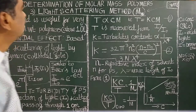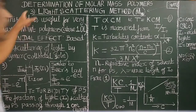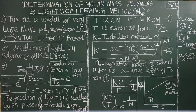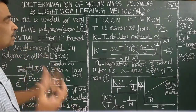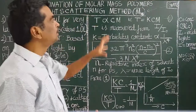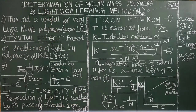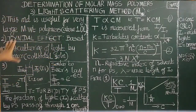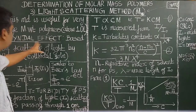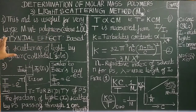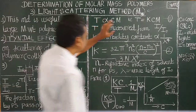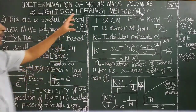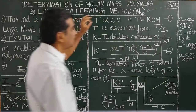Good morning. Today we cover the light scattering method for the determination of molar mass of polymers. This method is based on the Tyndall effect. Using this method, the mass average — or weight average — molar mass of the polymer is obtained.